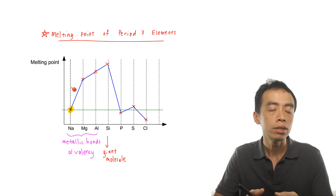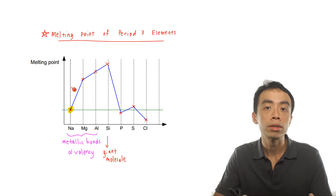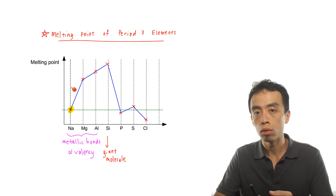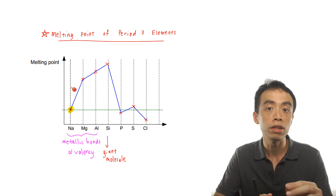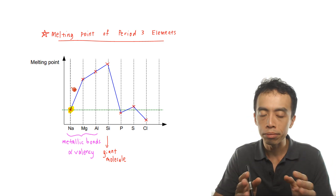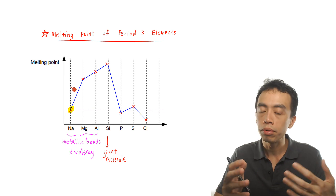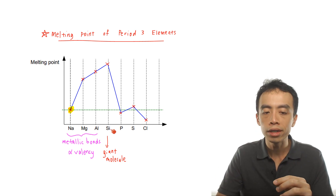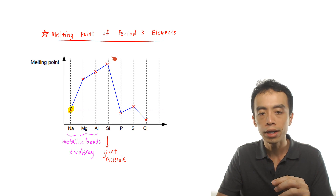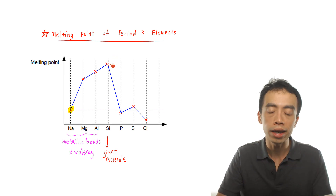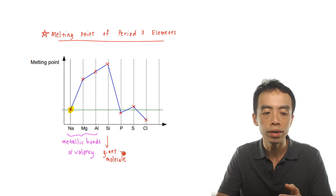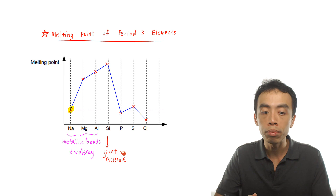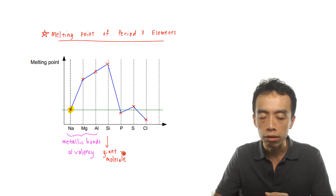Even ionic compounds have high melting points because ionic bonds are strong. We generally do not compare metallic bonds versus covalent bonds versus ionic bonds. It is important to keep in mind that silicon's melting point being the highest in this example is specific to Period 3. Thinking that any giant molecule must have a higher melting point than any metal is a serious misconception which we want to avoid.